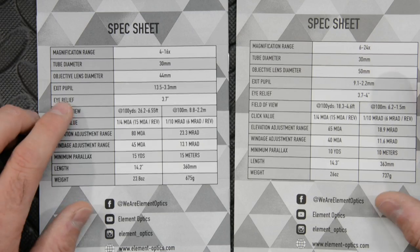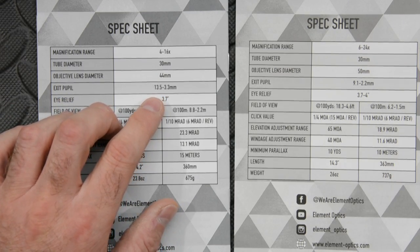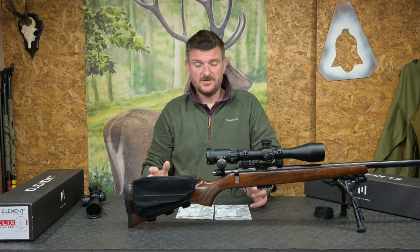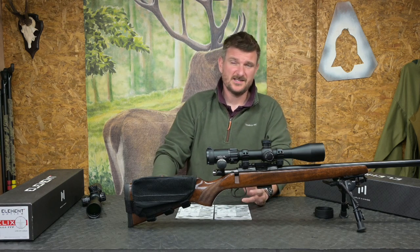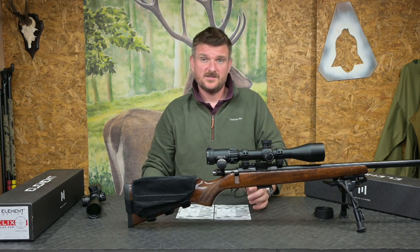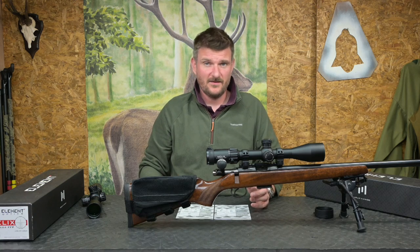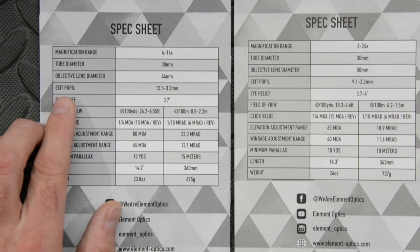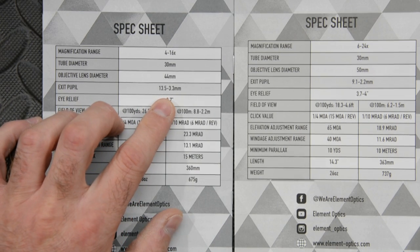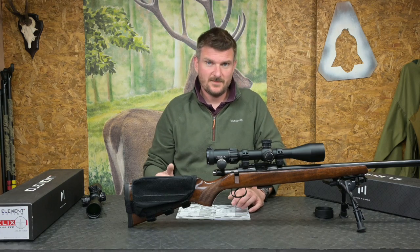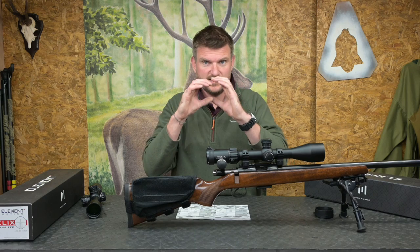The exit pupil is basically the size of the image that comes out of the back end of the scope towards your pupil. The average maximum size your pupil is going to be is about 7, maybe 8mm, depending on age, eye health and things like that. So there's not really much point having an exit pupil far bigger than that actual hole in your eye. As you can see, the exit pupil varies in size — this one goes from 13.5 to 3.3mm through the magnification range. As you increase magnification you actually decrease the size of the exit pupil.